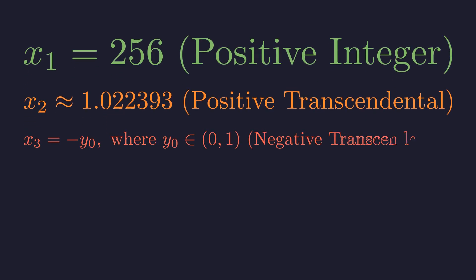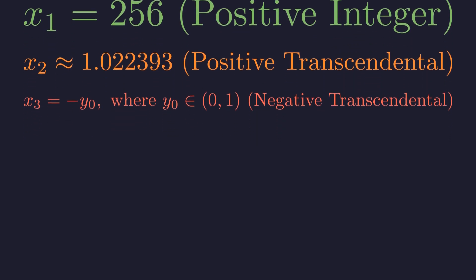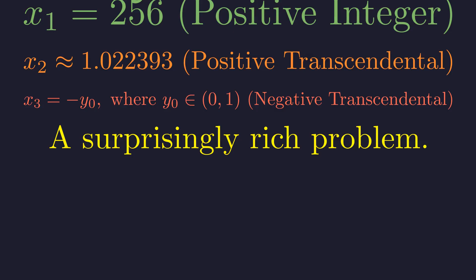And third, a negative transcendental solution, which is the negative of some value between 0 and 1. This problem is a fantastic example of how a simple-looking equation can hide a rich and complex set of solutions, spanning integers and transcendental numbers across both positive and negative domains.